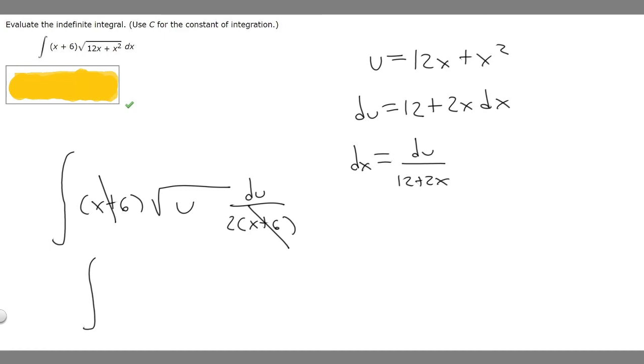We can rewrite our integral by moving the one-half out front. So it's (1/2) times the integral of square root of u du, because all we did was move this out front and cancel those.